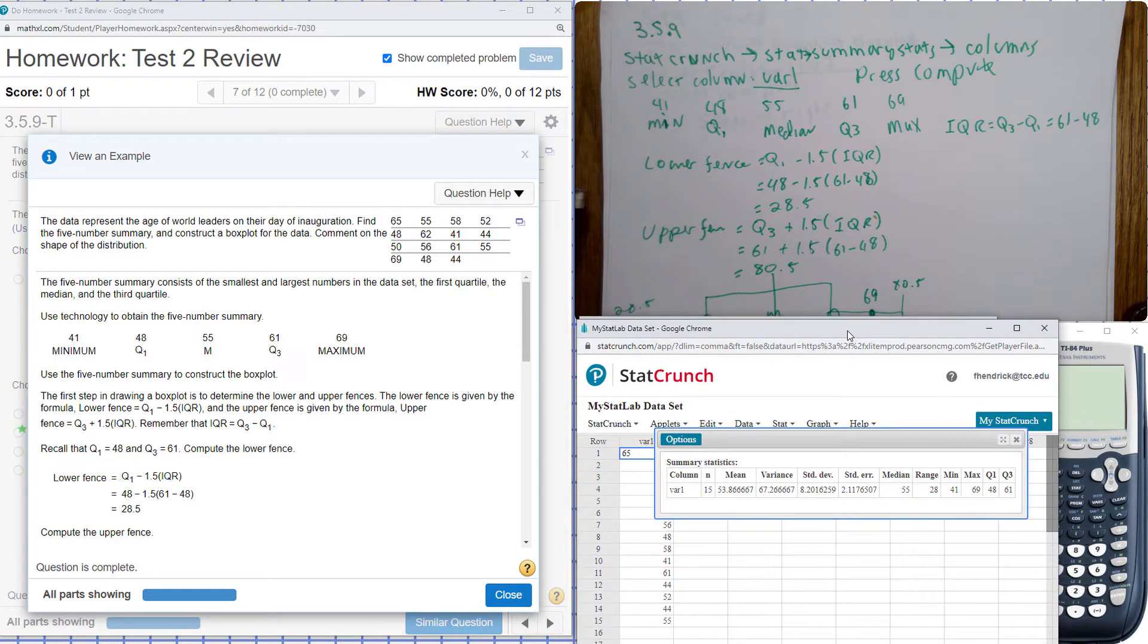And that gives us our data there. So you can see Q1 is 48, the median is our Q2, and we have our Q3 at 61. We have our max and we have our min.